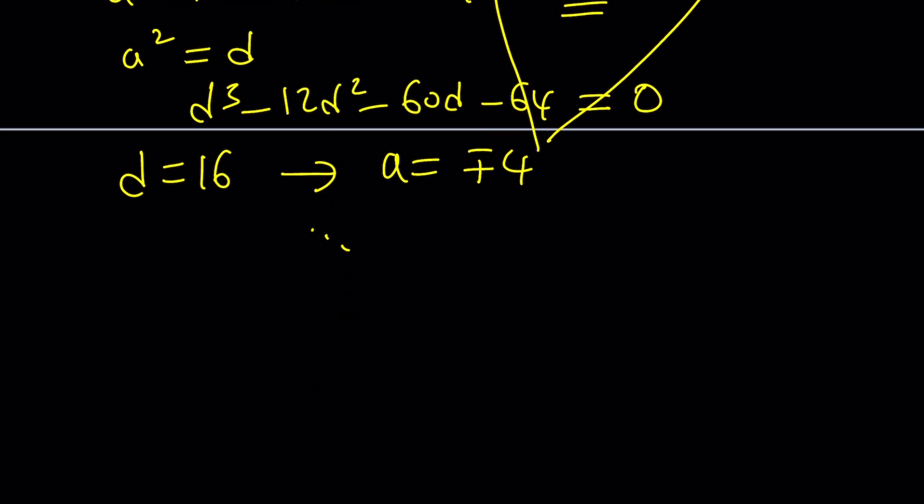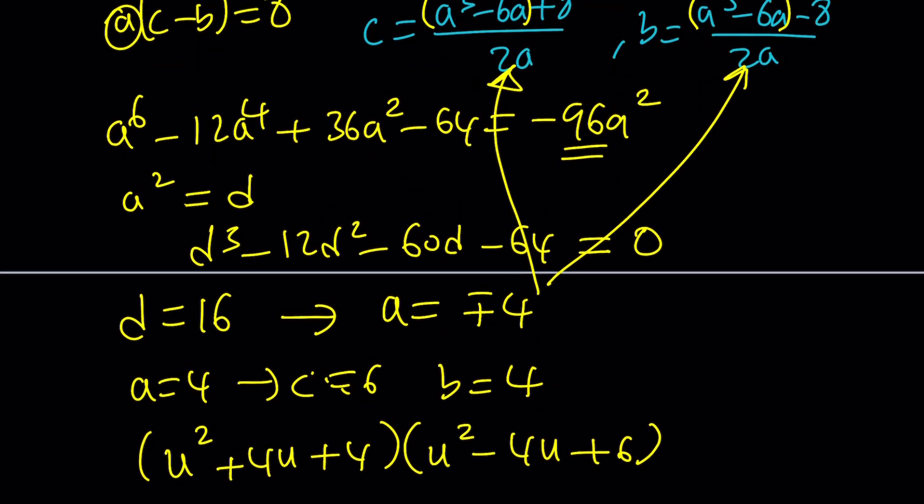You end up with the factors and find the solution from there. I'm going to leave that part as an exercise for you and I'll talk about an alternative method. But from this point on, that should be pretty straightforward. I can give you the factors. If a is equal to 4, then c should be 6 and b should be 4 as well. So this should give you u squared plus 4u plus 4 multiply by u squared minus 4u plus 6.